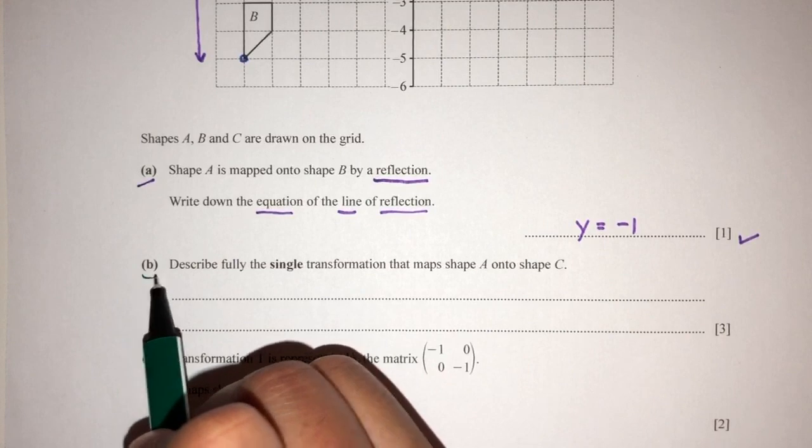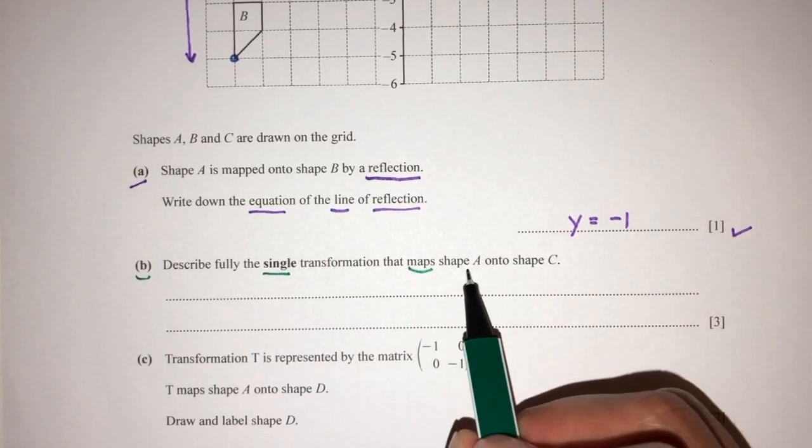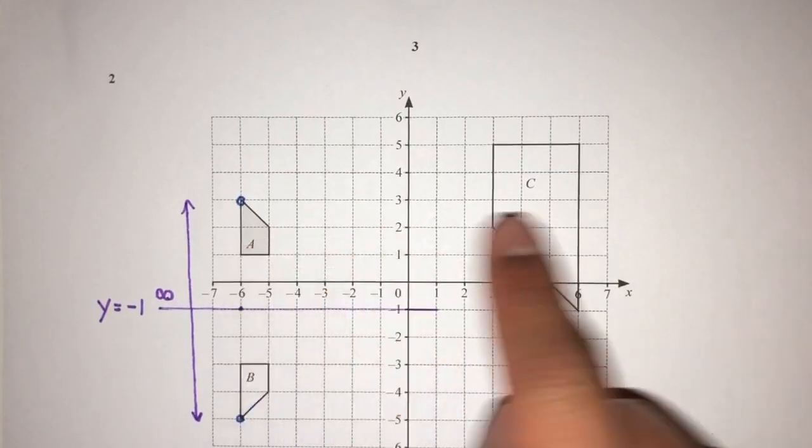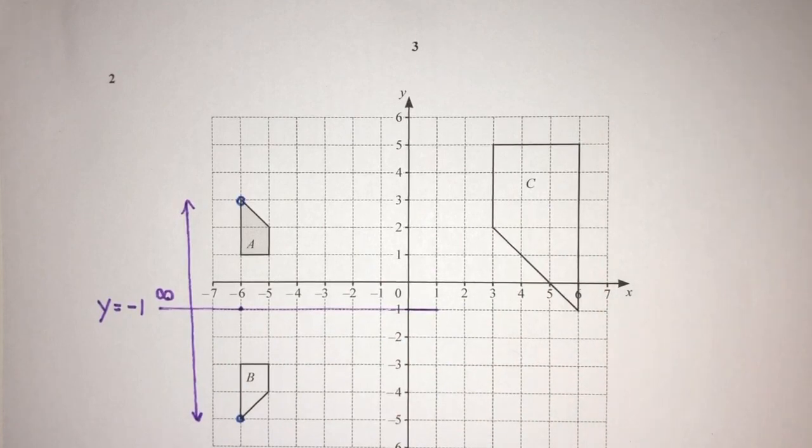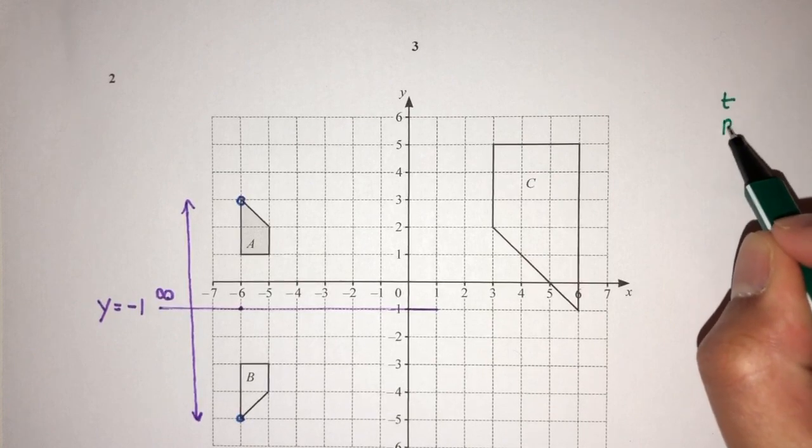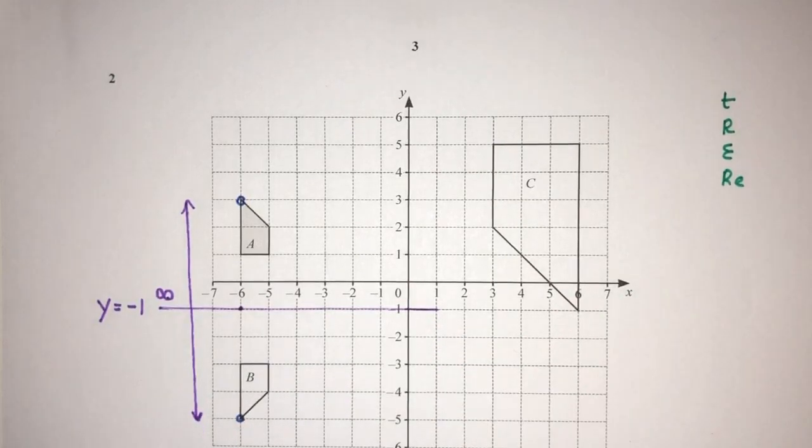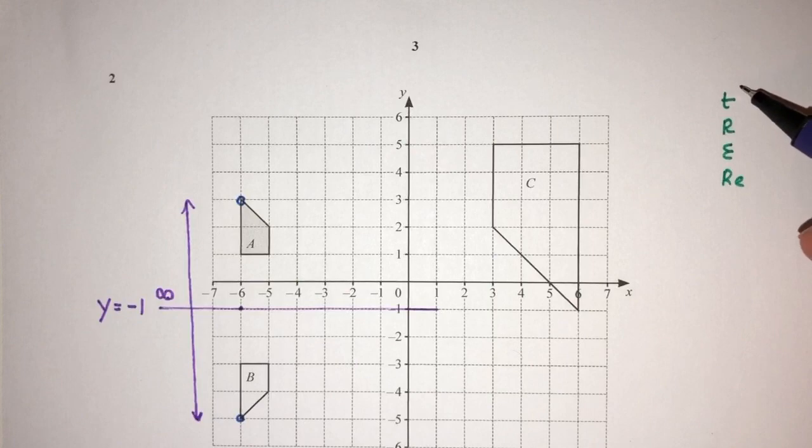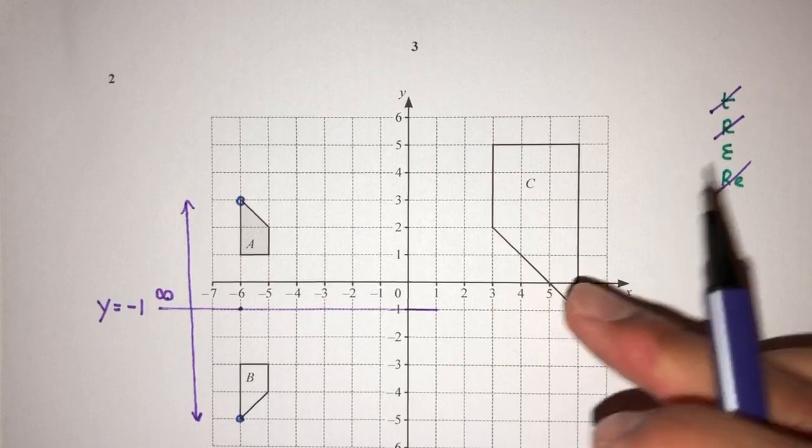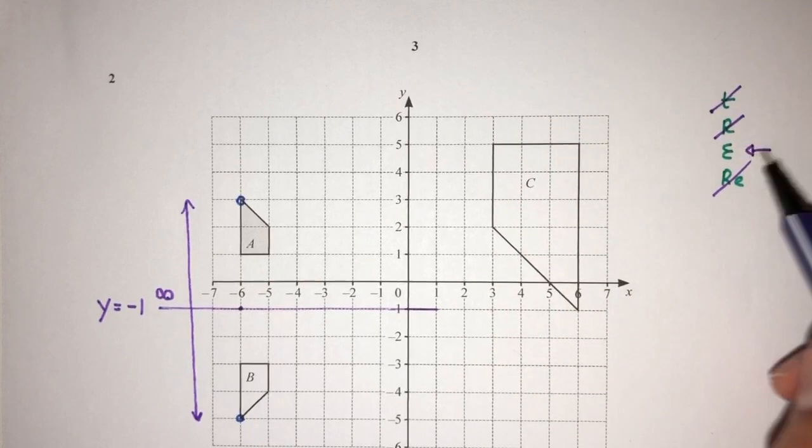Now for part B, we have to describe the single transformation that maps shape A onto shape C. Let's observe A onto C. We have only 4 transformations to remember in this syllabus: translation, rotation, enlargement, and reflection. By elimination, you can see that it cannot be translation, rotation, or reflection. Because the size of the shape has changed, it has to be an enlargement. That's the first thing.